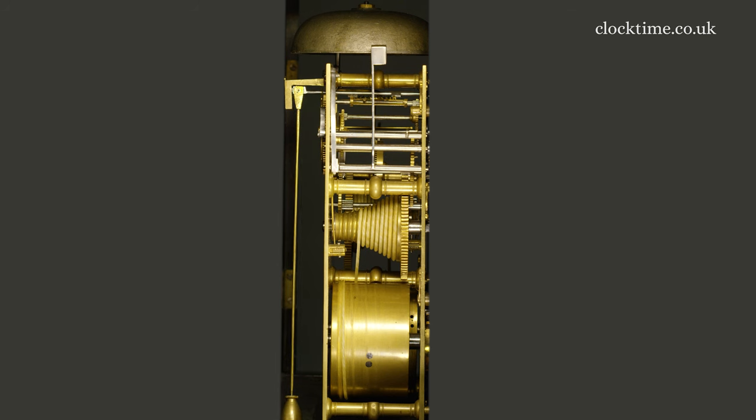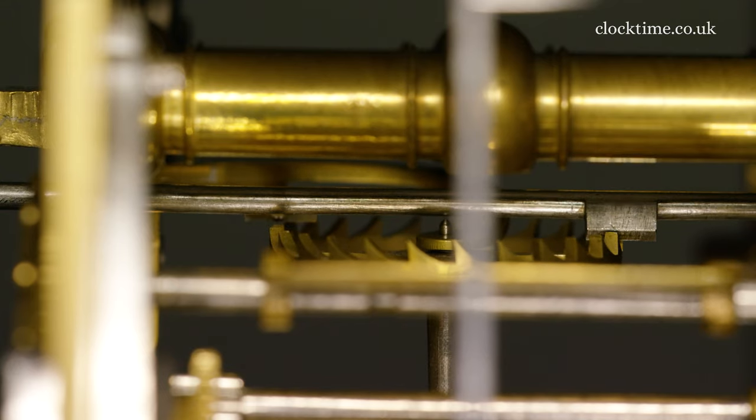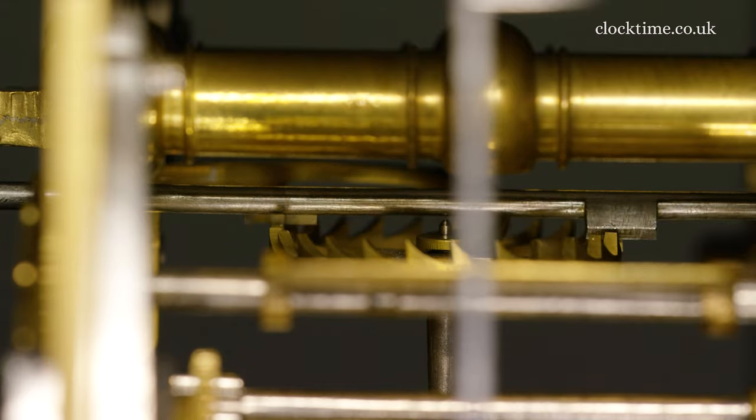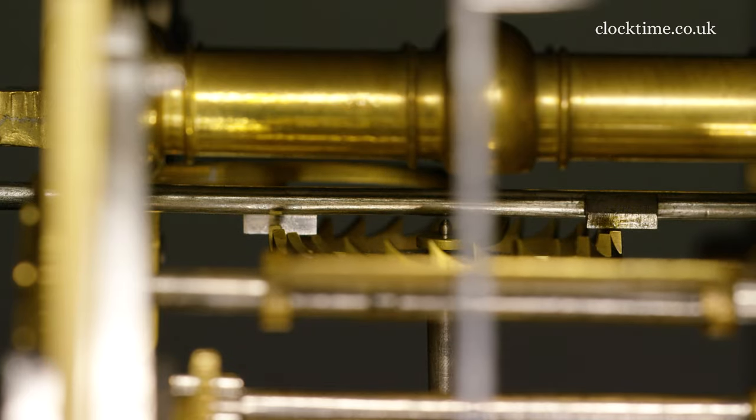Now we've moved across to the nine side to see the strike train. The train is partially wound onto the fusee and this is looking at the escape wheel again right through the width of the clock from the other side.